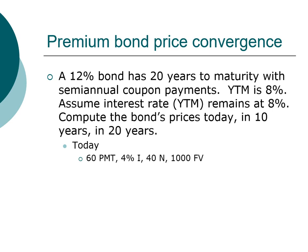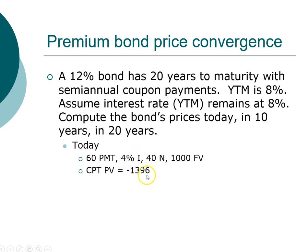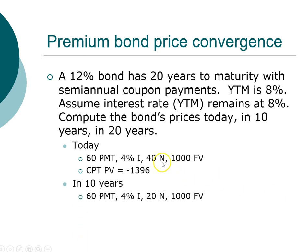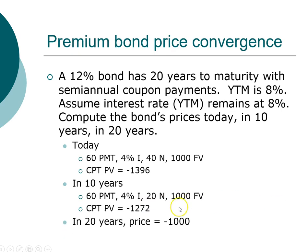Since the coupon rate is greater than the yield to maturity, we expect the price to be higher than the face value — and it is. The bond trades at $1,396 today, making it a premium bond. In 10 years, all the information remains the same except the number of periods, and the bond is still a premium bond, but the size of the premium is slightly smaller. And in 20 years, when the bond matures, it will have exactly the same value as the face value: $1,000.